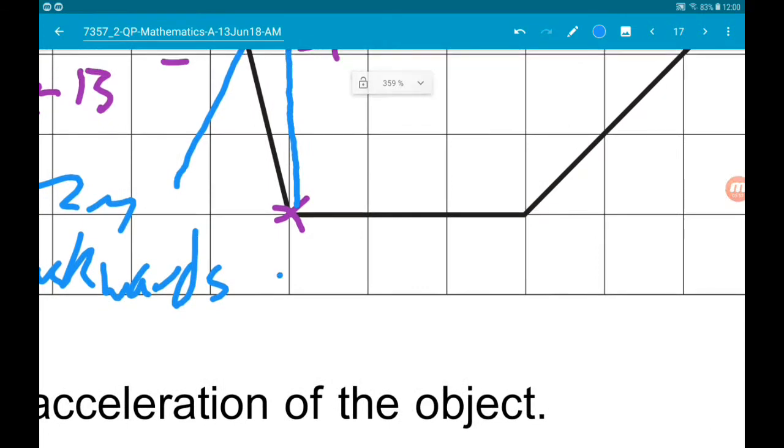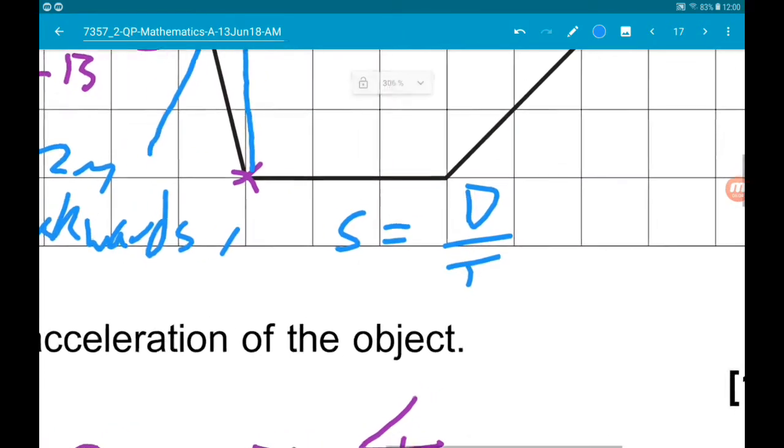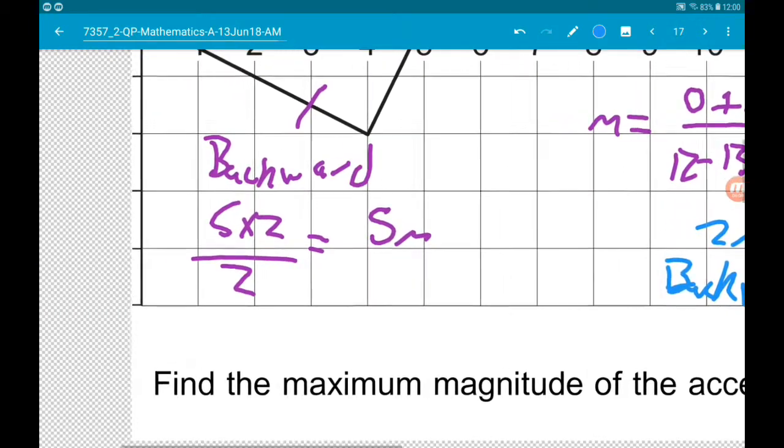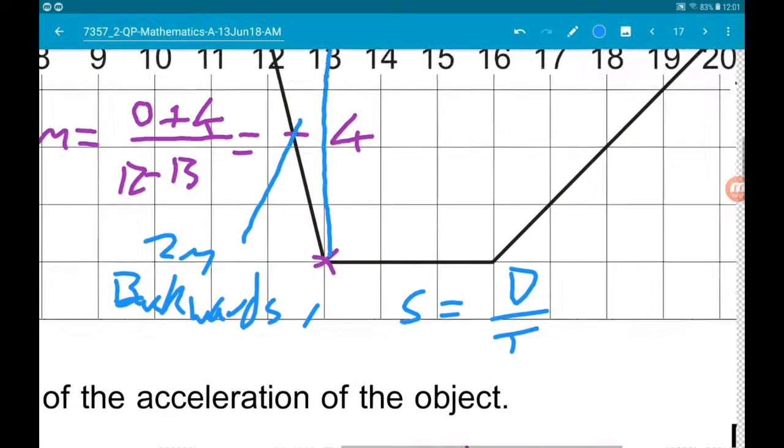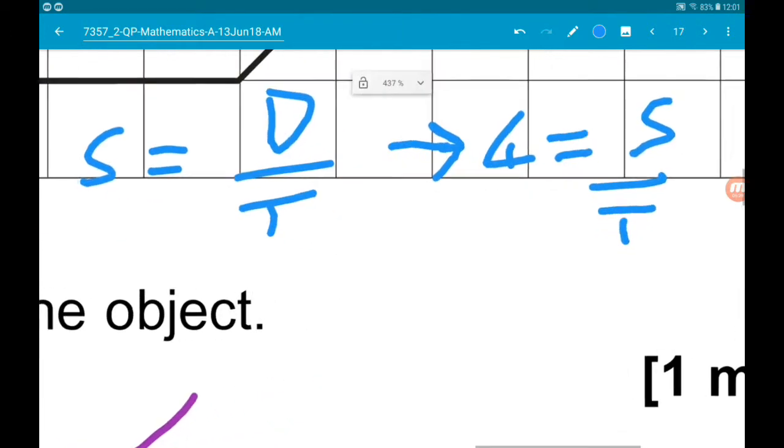So remember that speed is equal to distance over time. So we can work out, well we know our speed is 4 meters per second. The velocity is negative, the speed is positive. So we know that 4 is equal to we need to go 5 meters, so 5 over time. Therefore, time is 5 over 4, which is 1.25.